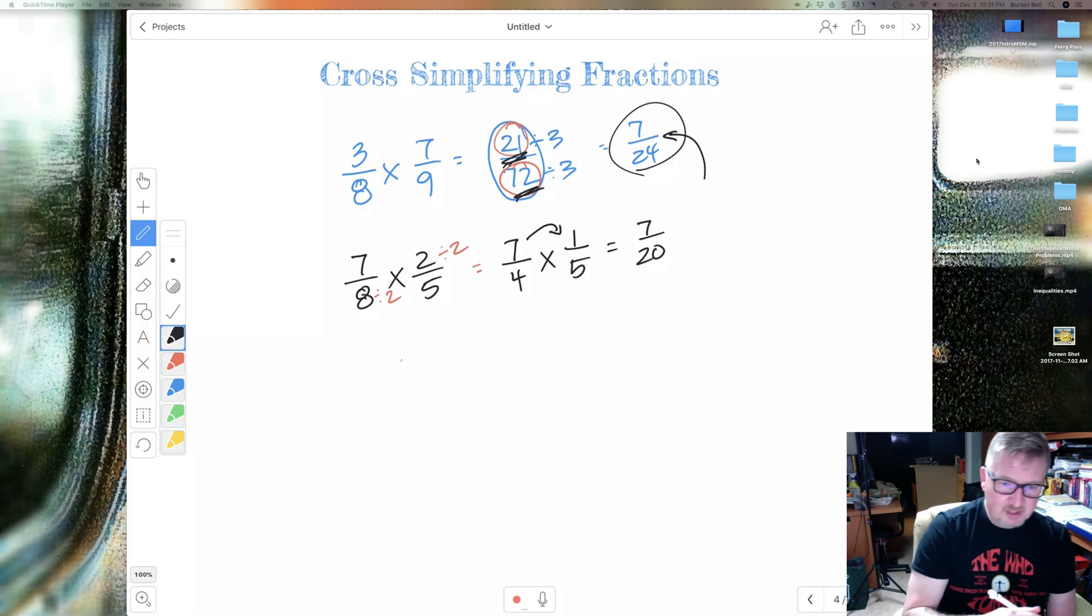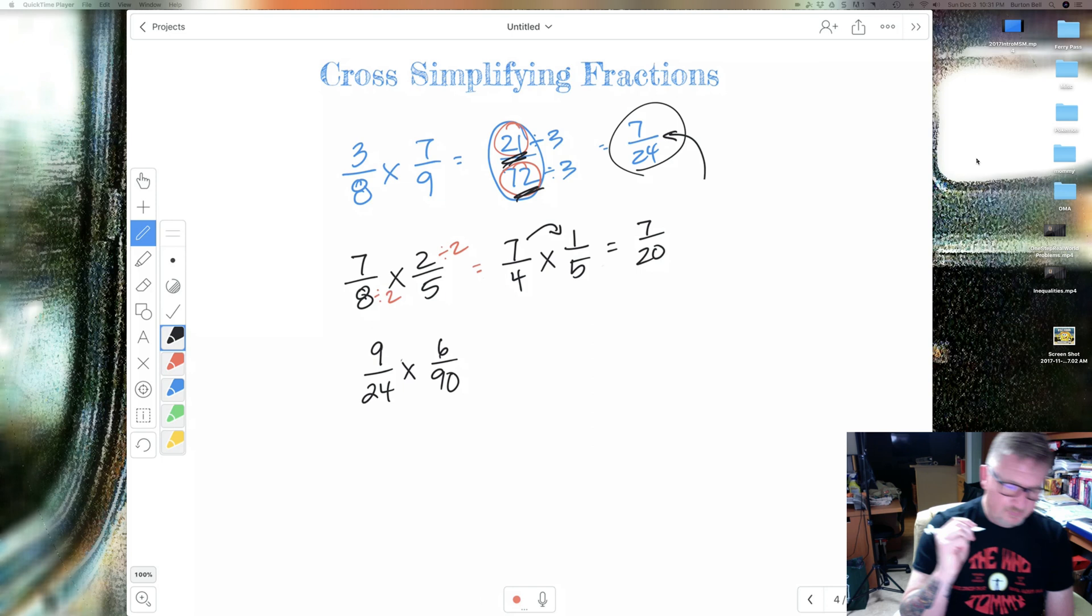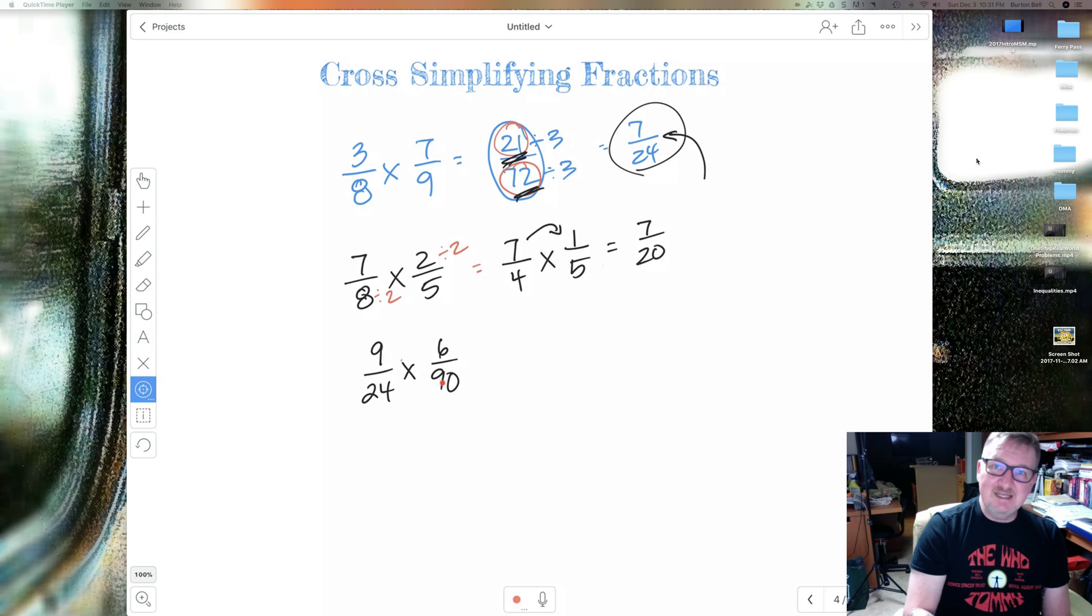Dividing 8 and 2 is a whole lot easier than potentially dividing 14 by 40. You see what I'm saying? So anyway, let's look at another example, and I'll let this one go. I got 9 over 24 times 6 over 90. So you might look at this right off and say, ooh, look, Mr. Bell, I can divide 9 and 90. And that's exactly what we're going to do.